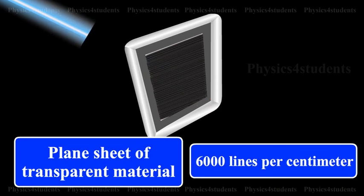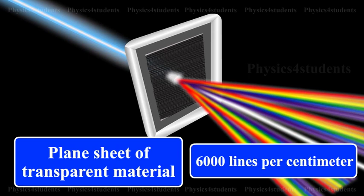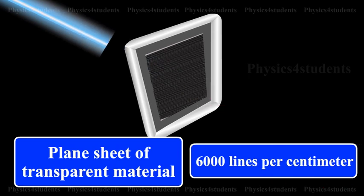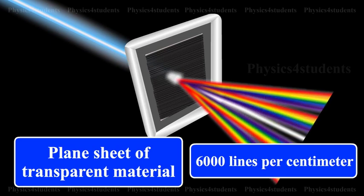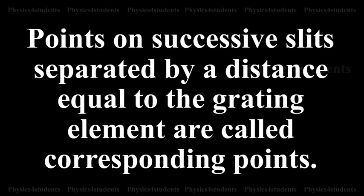The rulings act as obstacles having a definite width B and transparent space between the rulings act as a slit of width A. The combined width of a ruling and a slit is called the grating element E. Points on successive slits separated by a distance equal to the grating element are called corresponding points.